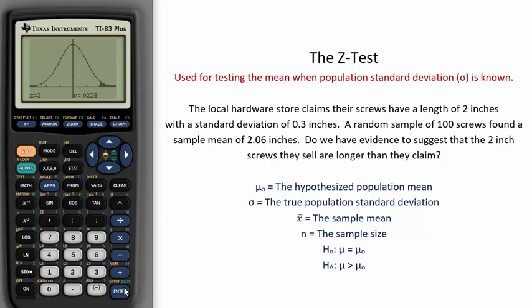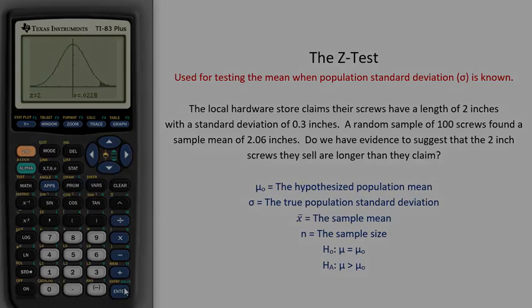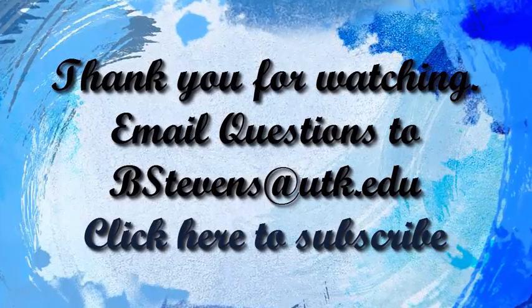In this instance, we would usually reject the null with an alpha of 0.05 and say there is evidence that the true mean of these screws' lengths is greater than 2.